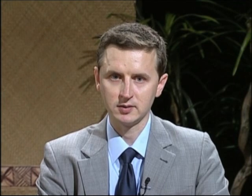These findings give very strong support to the call for revision of the current international classification of acute pancreatitis. As you know, the Atlanta classification defines two categories of severity — mild and severe pancreatitis — and assesses only the presence or absence of organ failure and presence or absence of any local complication.